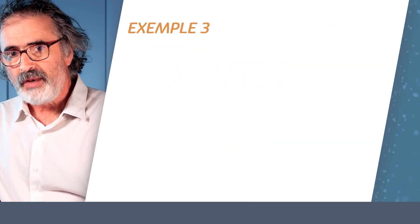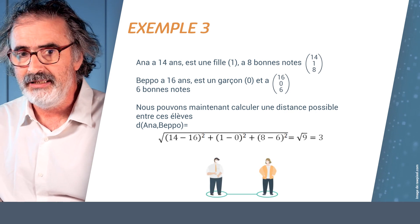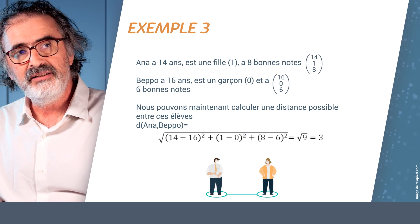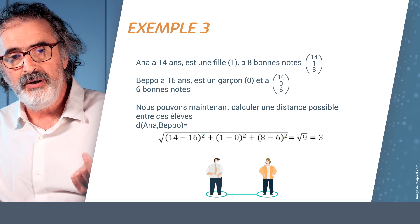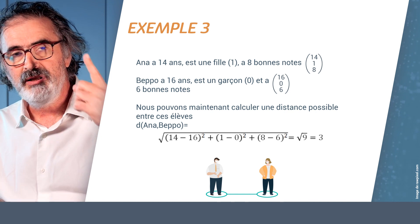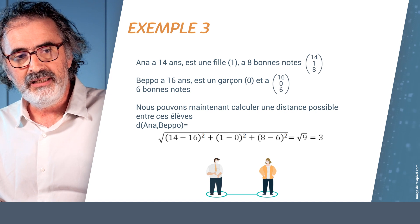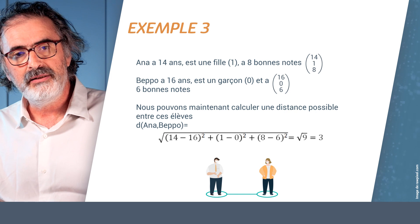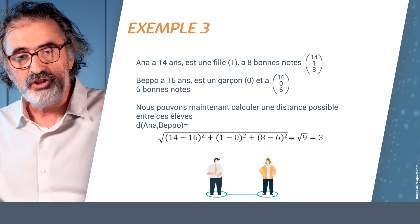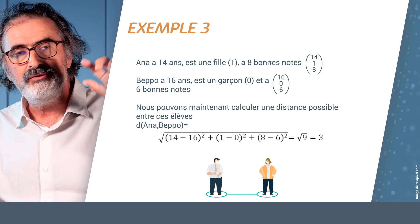Let's take another example. Anna is a girl, she is aged 14 and she's had eight good grades. Beppo is a boy, he's aged 16 and he's got six good grades. If I decide that the value one is associated to girl and the value zero is associated to boy, I now have a vector for Beppo and a vector for Anna. I can now compute the distance between the two vectors — which is, for this application, the distance between Anna and Beppo. I compute this using exactly the same formula and I obtain the result three. Three isn't the number of kilometers or meters between these two children — three is just a number that has value when I've got other children and I need to do two-by-two comparisons.